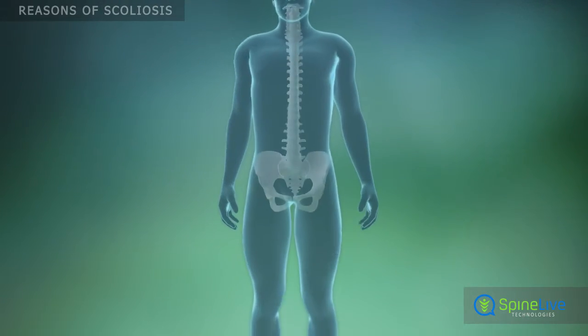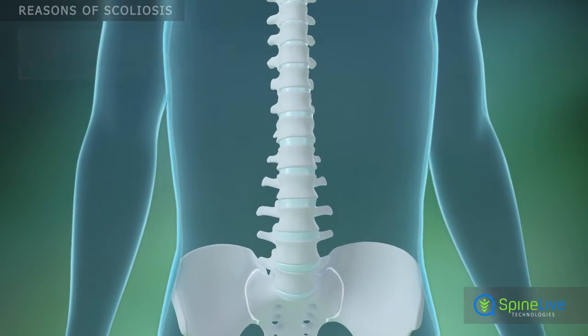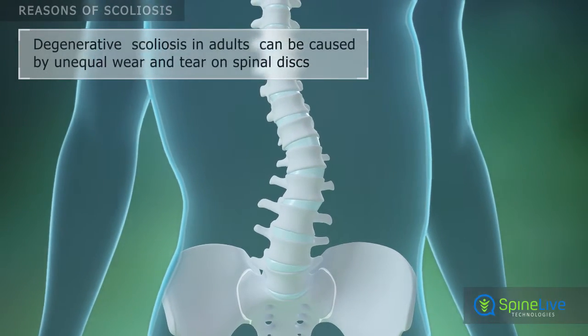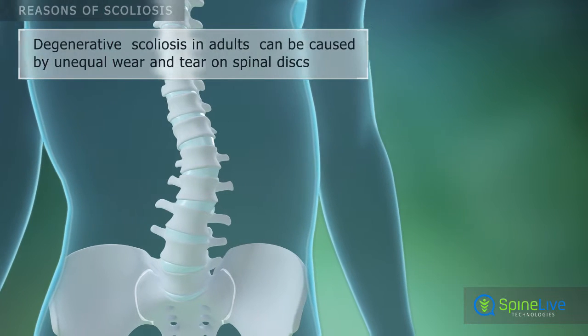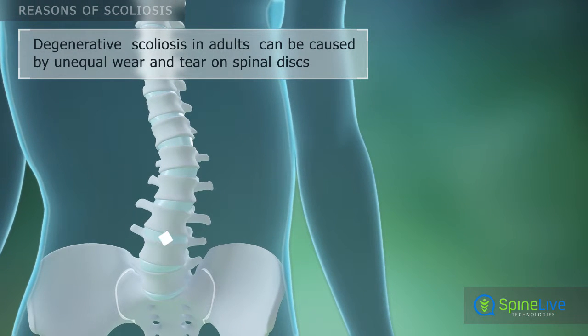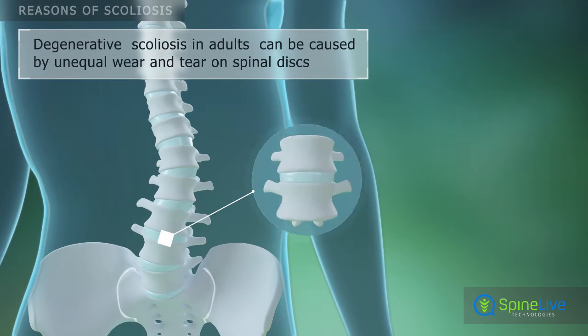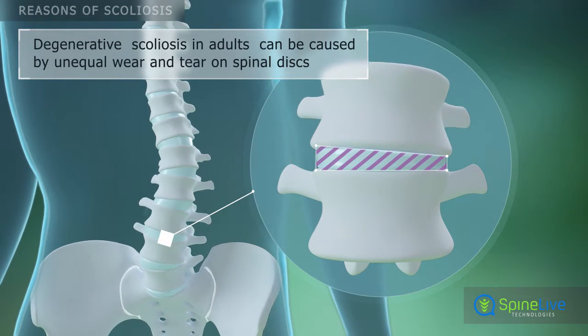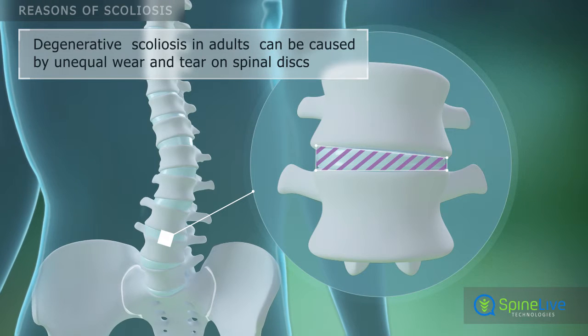Scoliosis in adults is usually due to discs on one side of the spinal column wearing out more quickly than those on the opposite side — this is called degenerative scoliosis.